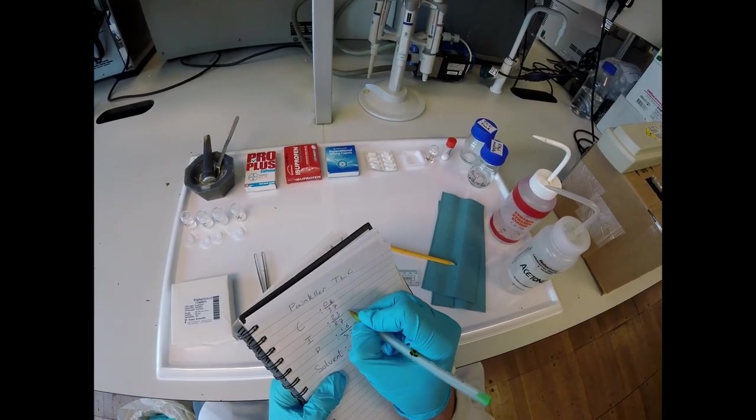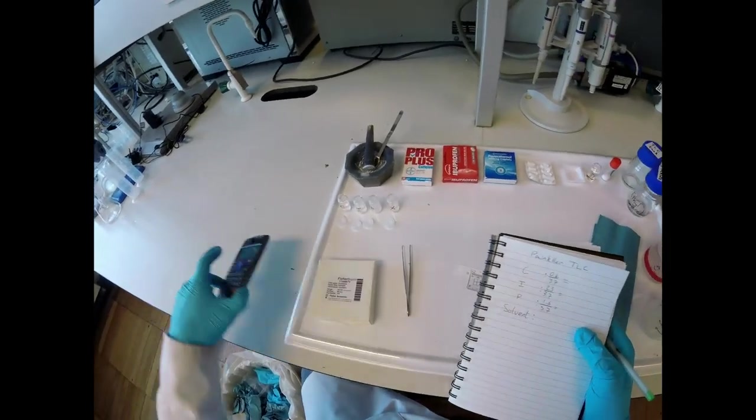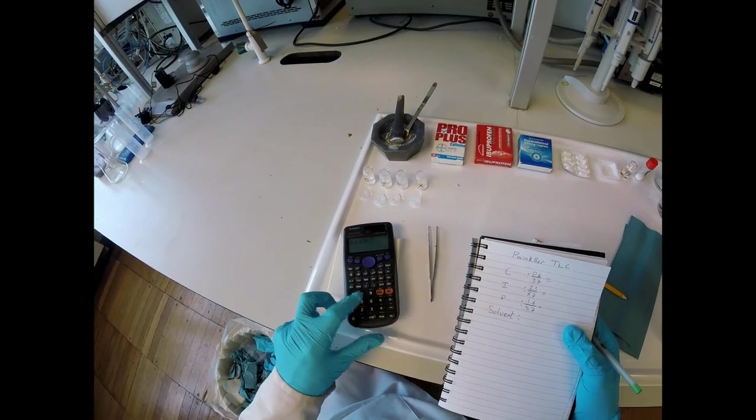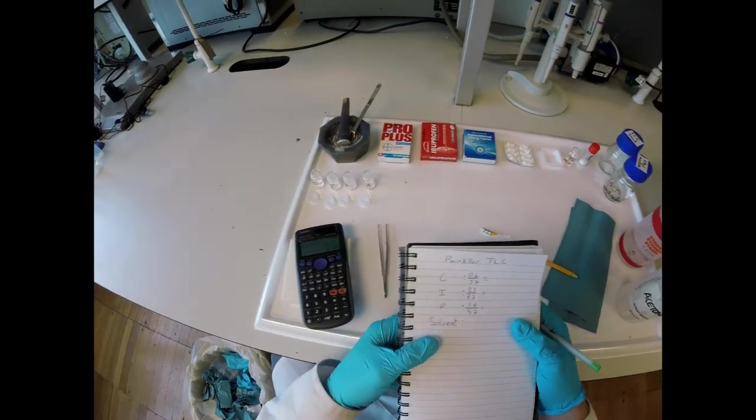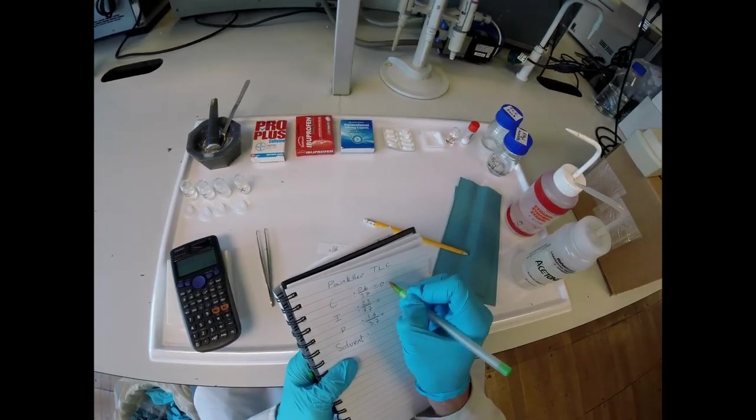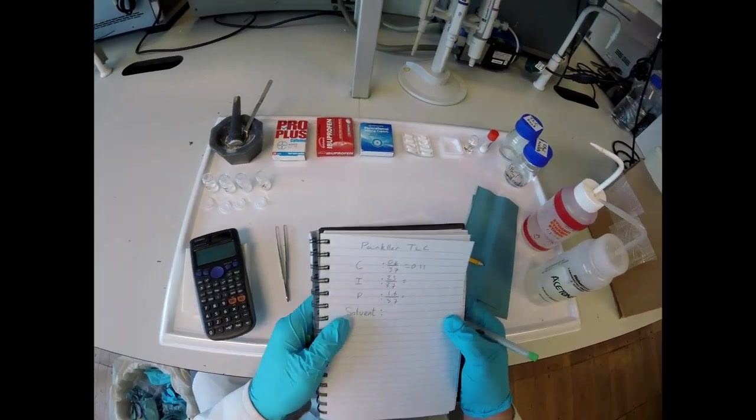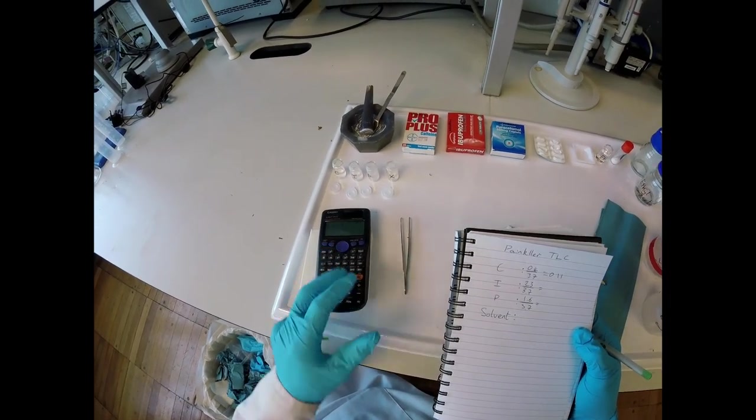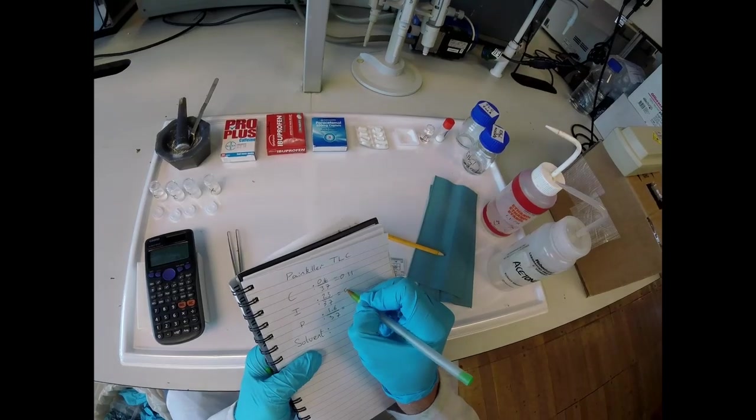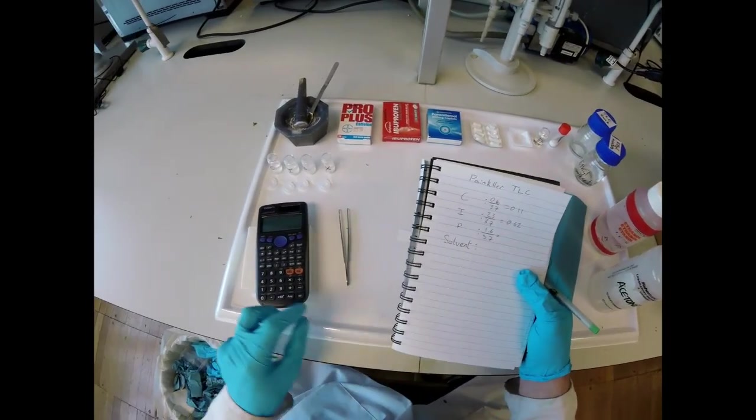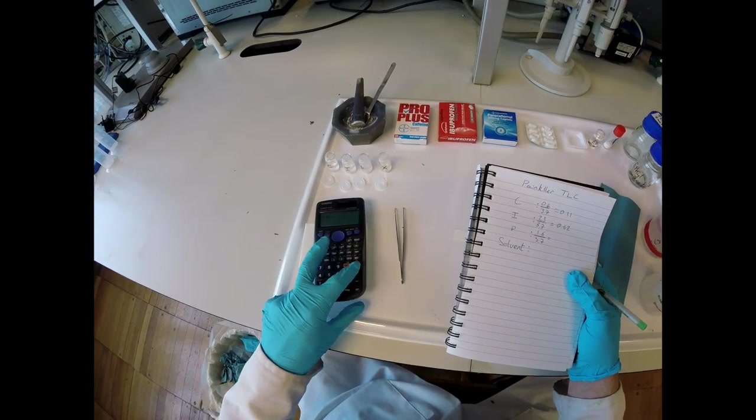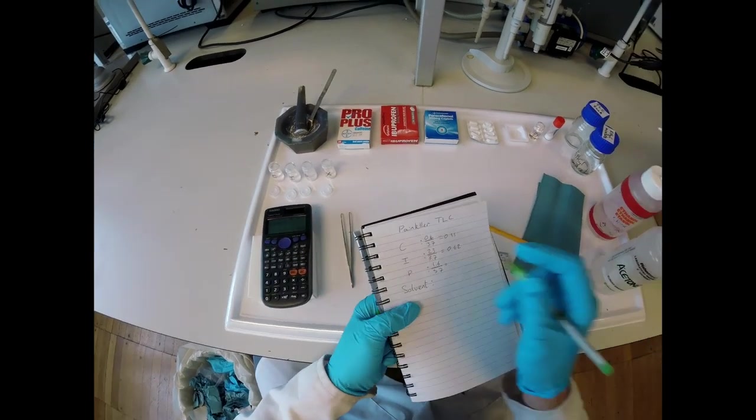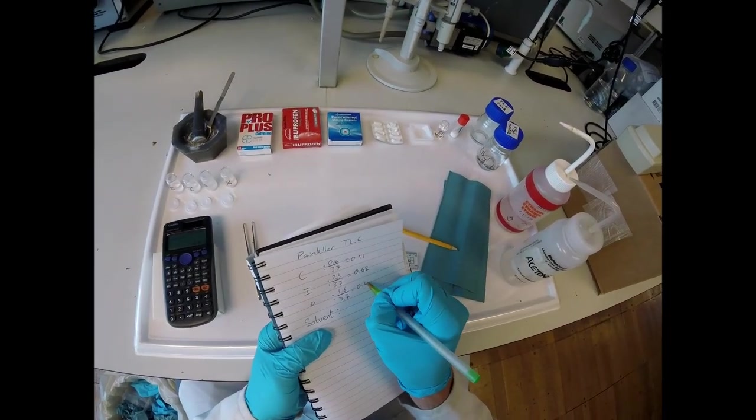I'll just pop those numbers into my calculator. 0.4 over 3.7 is 0.11 to two decimal places. 2.3 over 3.7 is 0.62 to two decimal places. And 1.6 over 3.7 is 0.43 to two decimal places.